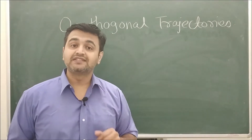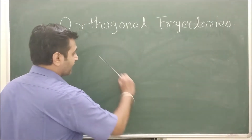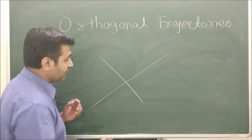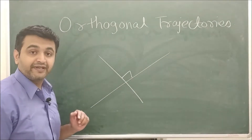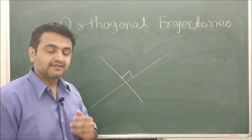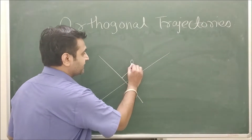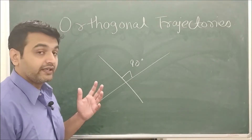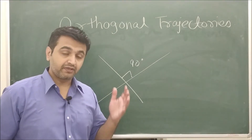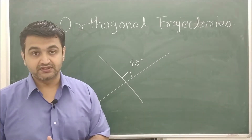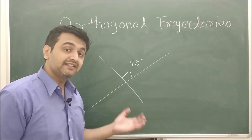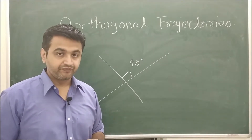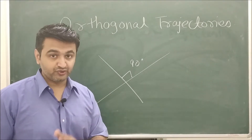When do we say two lines are perpendicular? If you have one line and another line, we say that the lines are perpendicular if the angle between them is 90 degrees. We have a very nice connection between perpendicular lines and their slopes: if the lines are perpendicular, then the product of their slopes is minus one. This is what we are going to use today.